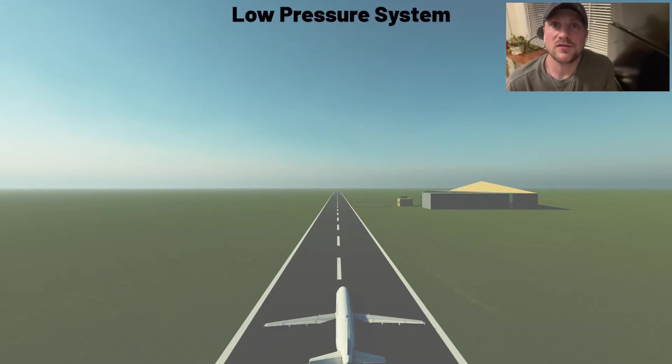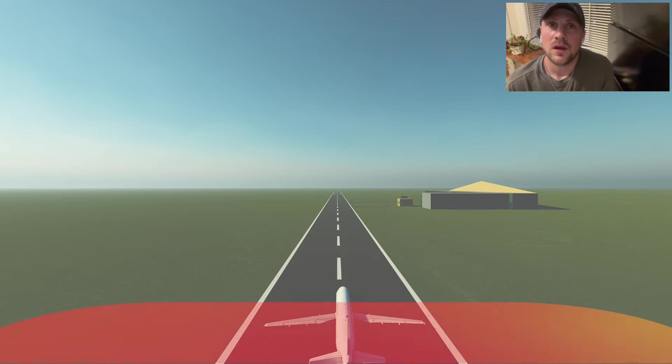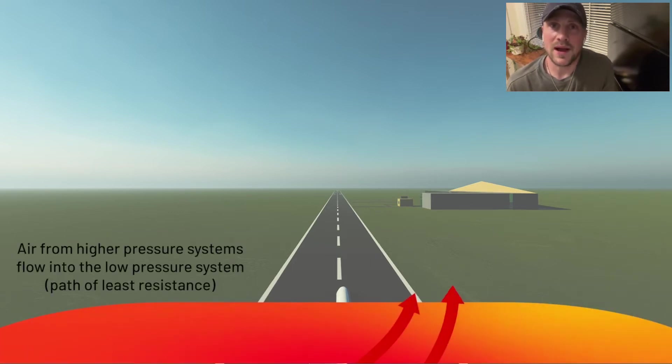A low pressure system rises from the lower atmosphere, spins, and brings in surrounding warm air from the surface. Let's break it down. Warm air near the surface from higher pressure systems surrounding a low pressure system gets drawn in. Again, high pressure goes to the path of least resistance.